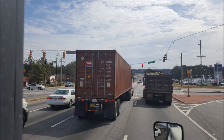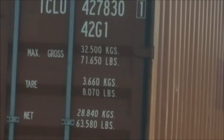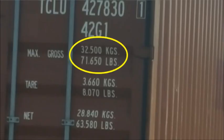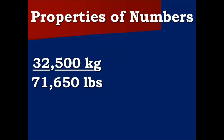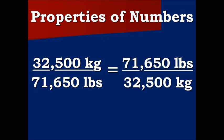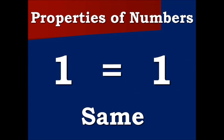So our driver needs a conversion factor, which by luck or regulation happens to be displayed on most containers. Now this conversion factor or conversion ratio can be written either with the kilograms on top and the pounds on the bottom, or with the pounds on top and the kilograms on the bottom. It depends on which way you are trying to convert. Both are the same and both are equal to 1.